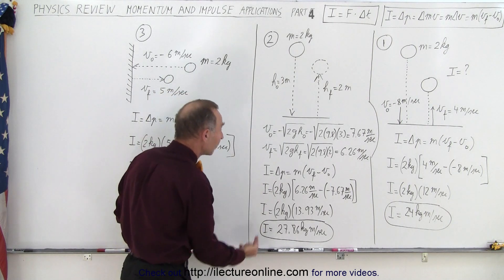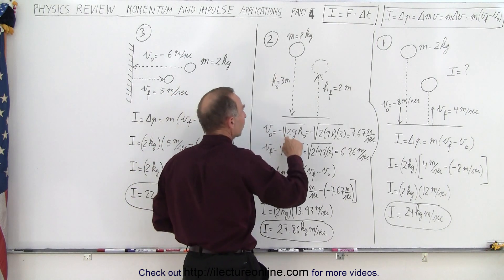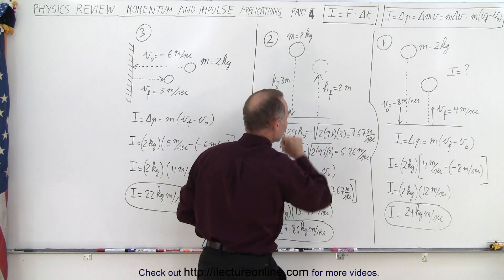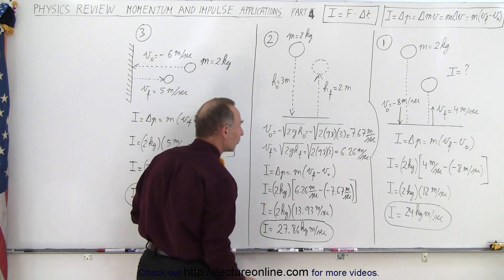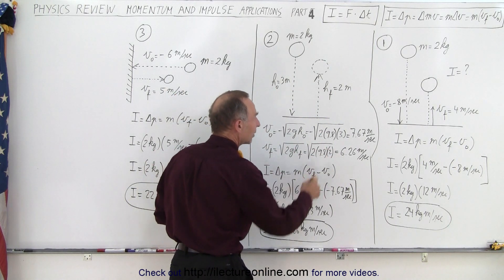Of course the initial velocity is negative, the final velocity is positive. It starts from a height of three meters, so from that we can calculate that the velocity of impact is 7.67 meters per second, and the velocity by which it leaves the ground is 6.26 because the final height is two meters.